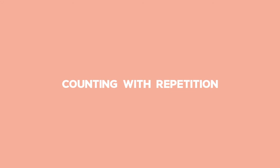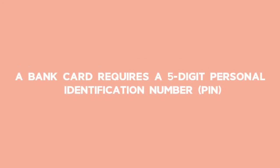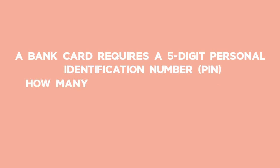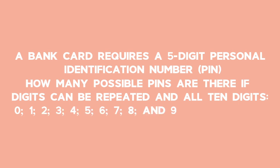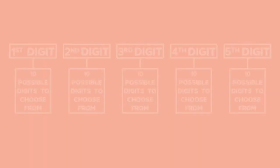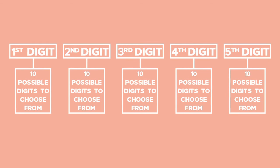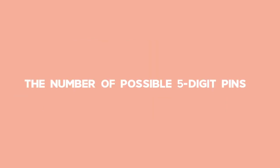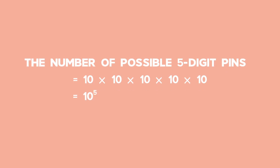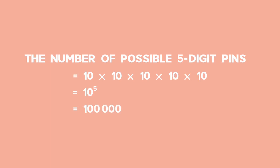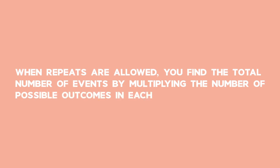Example 1: Counting with Repetition. A bank card requires a five-digit personal identification number (PIN). How many possible PINs are there if digits can be repeated and all 10 digits — 0, 1, 2, 3, 4, 5, 6, 7, 8 and 9 — can be used? As can be seen from the diagram, there are 10 possible digits that can be used for the first digit, and 10 possible digits for the second digit, and so on. The number of different five-digit PINs is equal to 10 times 10 times 10 times 10 times 10. This can be written as 10 to the power of 5, or 100,000. When repeats are allowed, you find the total number of events by multiplying the number of possible outcomes in each stage of an event.